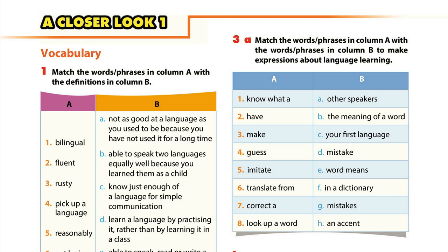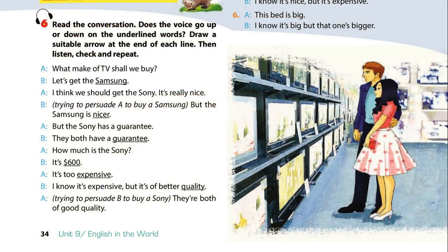Unit 9, Page 34. A closer look 1. Pronunciation. Activity 6: Read the conversation. Does the voice go up or down on the underlined words? Draw a suitable arrow at the end of each line. Then listen, check and repeat. What make of TV shall we buy? Let's get the Samsung. I think we should get the Sony. It's really nice. But the Samsung is nicer. But the Sony has a guarantee. They both have a guarantee.